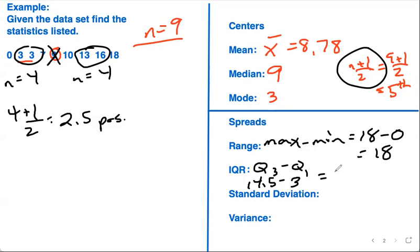Standard deviation, you use a calculator for, you'd end up getting 6.16. Variance would be the standard deviation squared, you'd actually get about 38. These values you would use a calculator for.